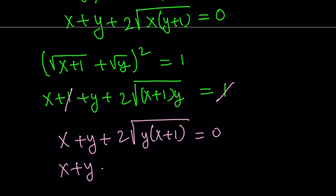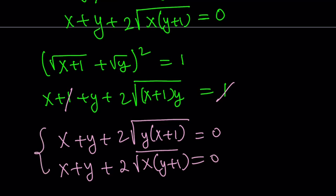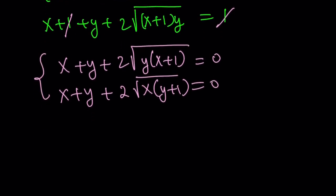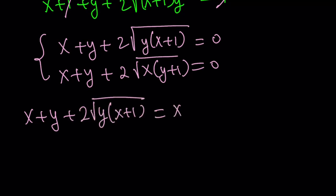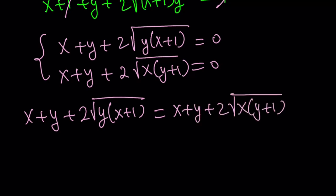Now, both equations equal 0, which means they're equal to each other. If two things equal the same thing, they're equal. So we set these two equations equal to each other. The x plus y cancels from both sides, and then the 2 cancels. Squaring both sides of what remains gives y times (x+1) equals x times (y+1).